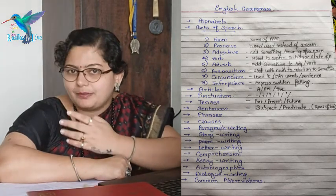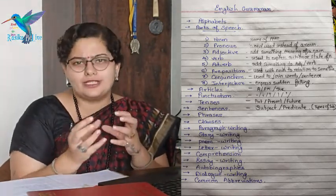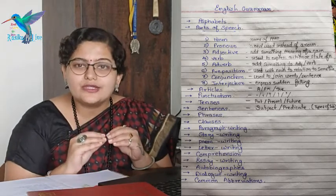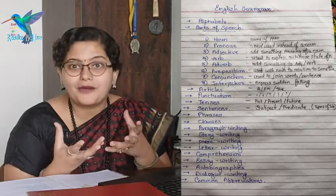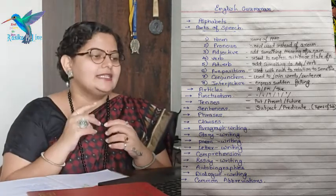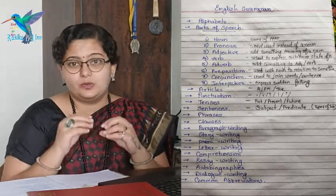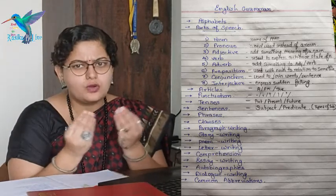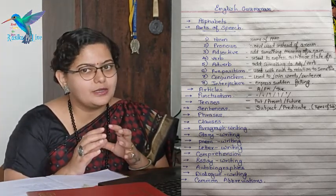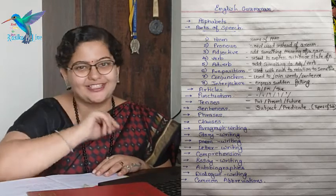Next you can see there is preposition. Preposition is nothing but which shows the relevance with another word — it may be again a noun or pronoun. So it shows the relevance: it is where, what about it. I will tell you more when I teach you preposition. The next is conjunction — conjunctions are words used to join two words or two sentences. Then we have interjection, which is nothing but a sudden expression — Wow! Oh! I will tell you more in my interjection video.